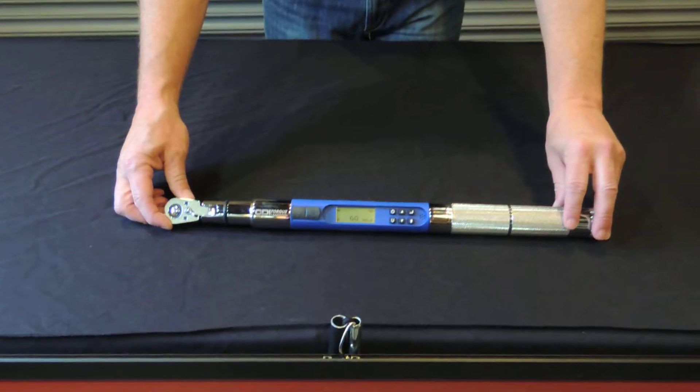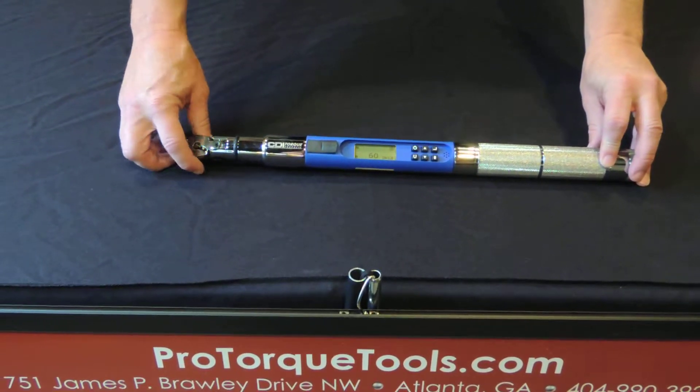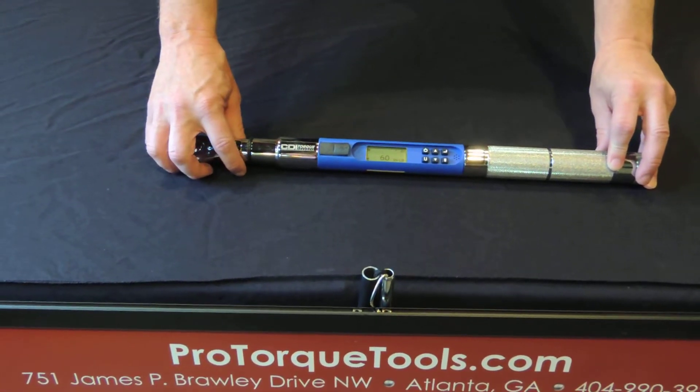This is the digital torque wrench from CDI Torque. This is their ASG model. It's their most advanced and most accurate model.